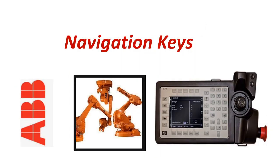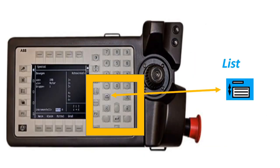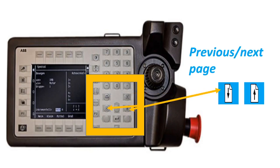Our next topic is Navigation Keys. List: press this key to move the cursor from one part of the window to another, normally separated by a double line. Previous or Next Page: press this key to see the next and previous page.